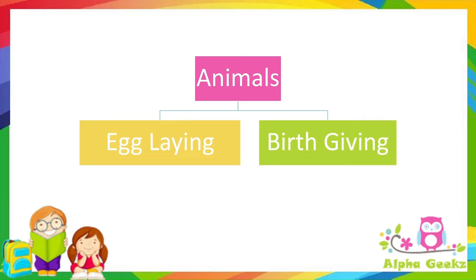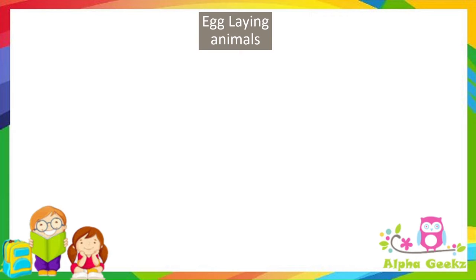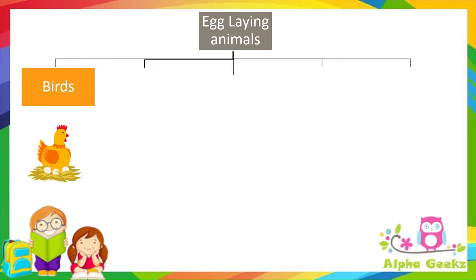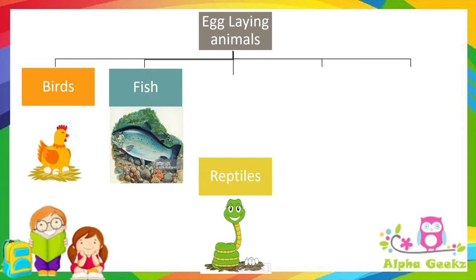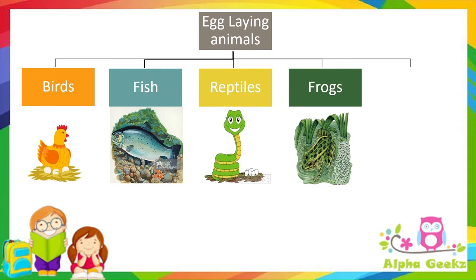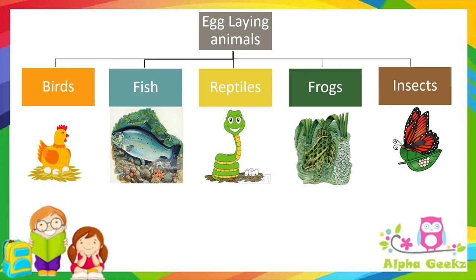Animals can be categorized based on how they reproduce — either they are egg-laying animals or birth-giving animals. Animals that lay eggs include birds, fish, reptiles, frogs, and insects.